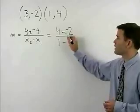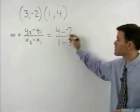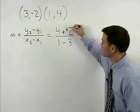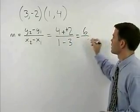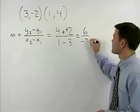Remember that minus a negative can be thought of as plus a positive. So 4 plus 2 is 6, and 1 minus 3 is negative 2.